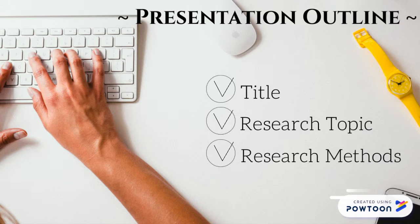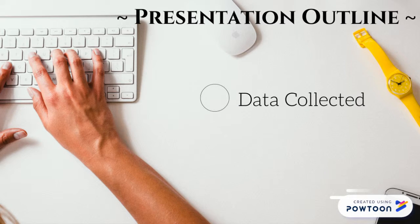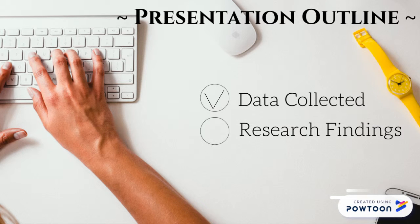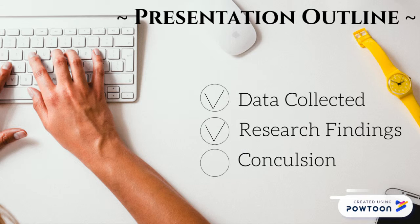Data collected: the data collected section should include charts and graphs of the data you collected. Research findings: the research findings section should explain what the data means in the context of your research and what it means for the field that you're studying. Conclusion: in the conclusion, talk about what you've learned from your research and future studies.